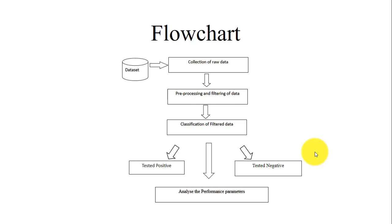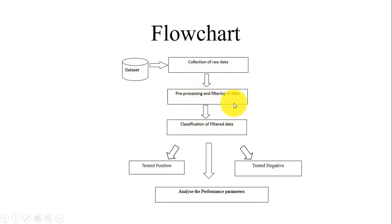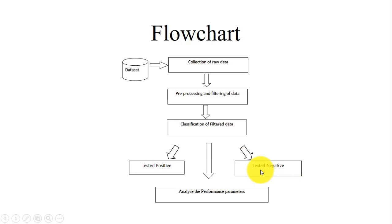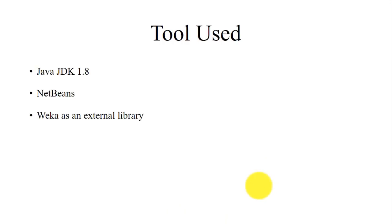Now about the flowchart — how we proceed with this project. First is data collection: the data can be collected from the UCI repository, where Pima Hospital's diabetes dataset is available. We collect that dataset, then pre-process or filter it to remove missing values, outliers, or noise. After that, we classify the filtered data using the random forest technique into positive or negative — that is, patients who have diabetes or patients who do not. Finally, we analyze the performance parameters of the algorithm. The tool used is Java JDK 1.8 and NetBeans with Weka as an external library.